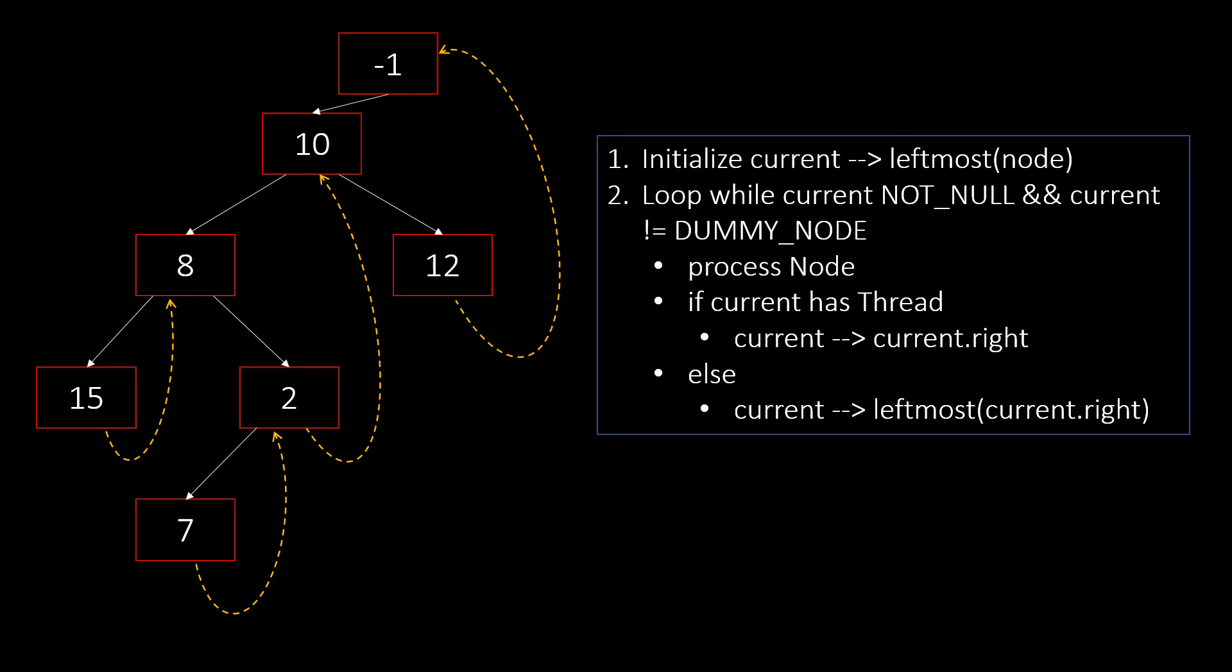If so, we follow the thread and set the current as current.right. Otherwise, there is a right node. So, we set the current as leftmost node of current.right.